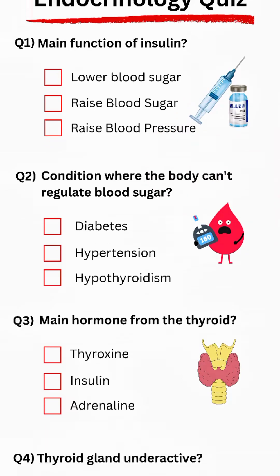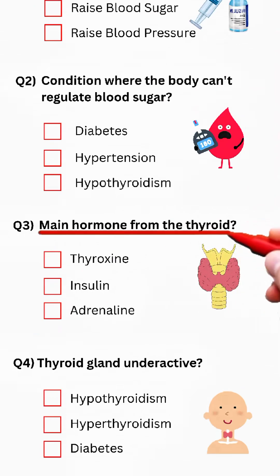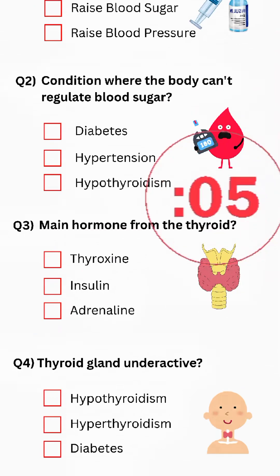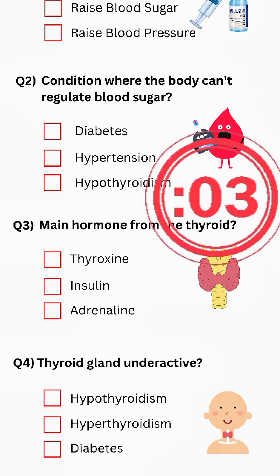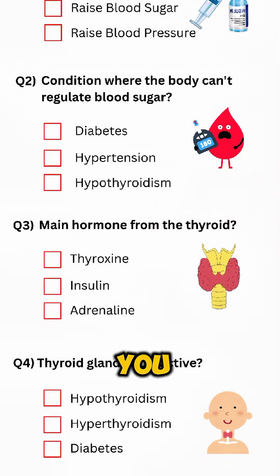Question 3: What is the main hormone from the thyroid? Answer: Thyroxin.